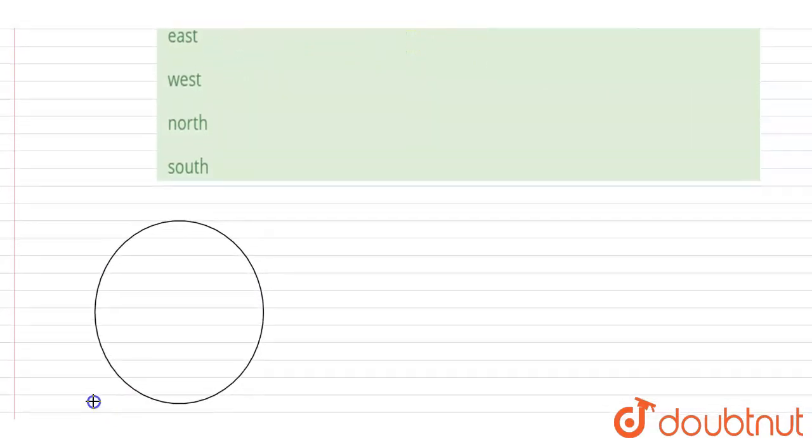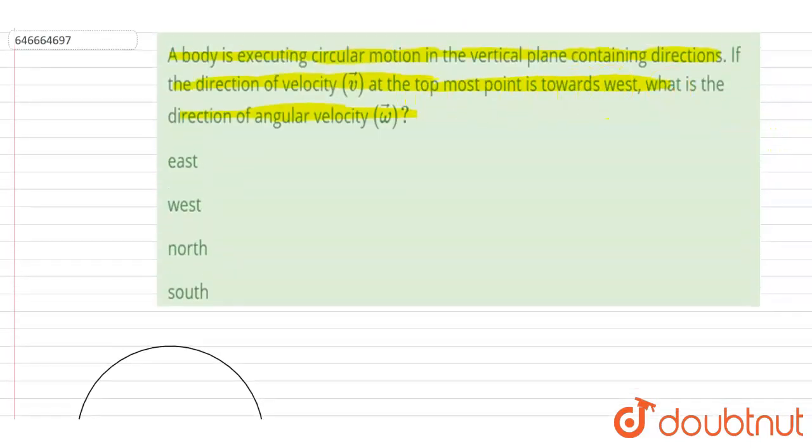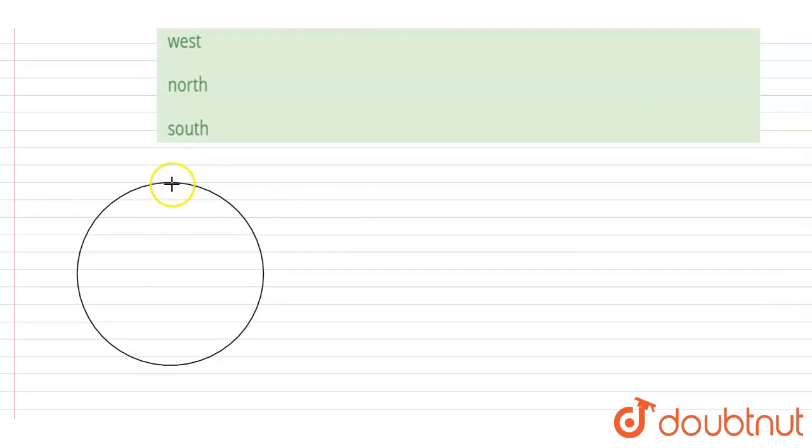If you see at the topmost point, it is toward west like this. So if I draw, this is east, this is west, and if you see in this direction it will be north.